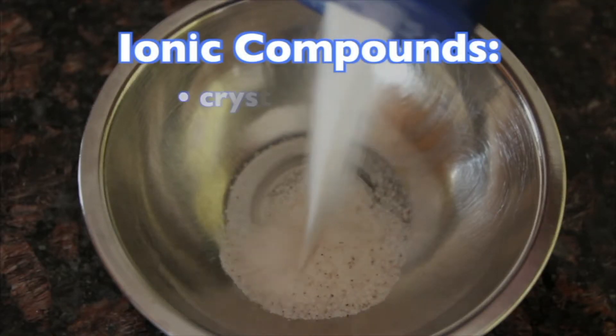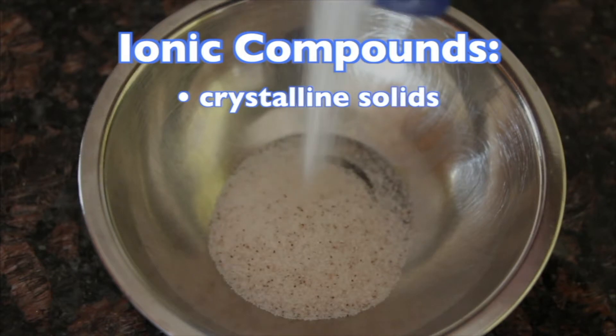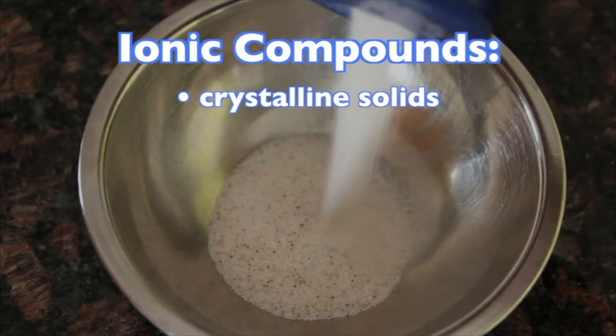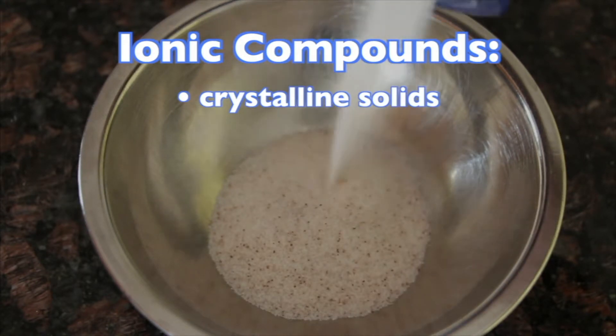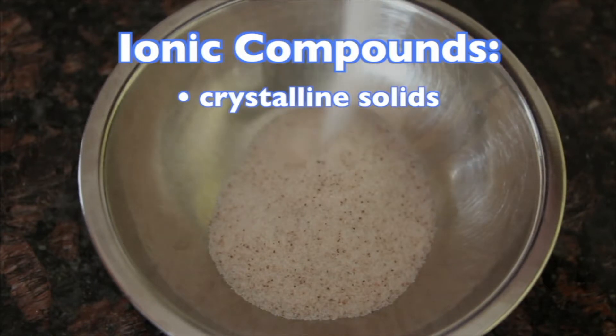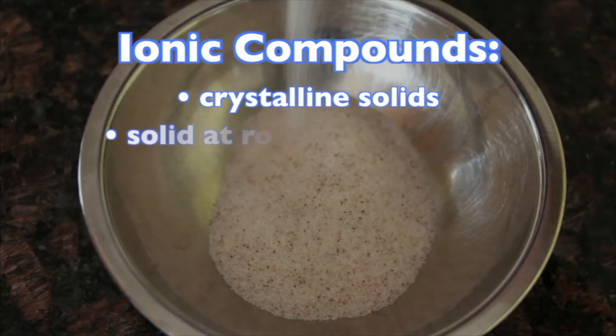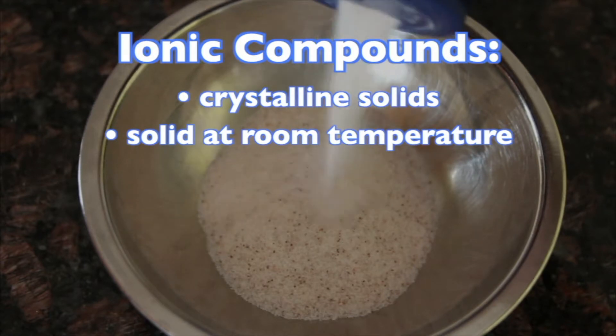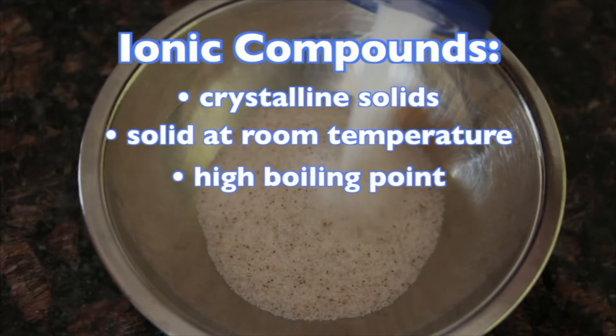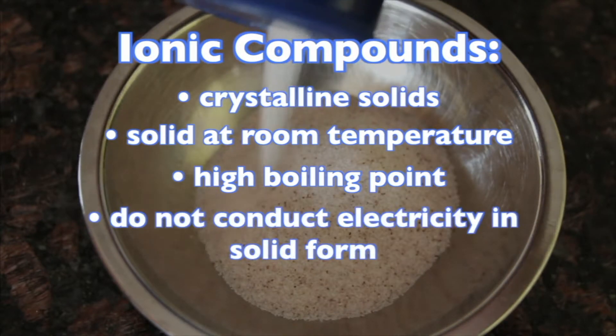Ionic compounds generally form crystalline solids with regular lattice structures because oppositely charged ions self-organize in a regular way to form giant ionic lattices. These compounds are typically solid at room temperature and have high boiling points. Furthermore, most ionic compounds do not conduct electricity as solids.